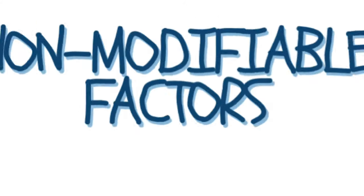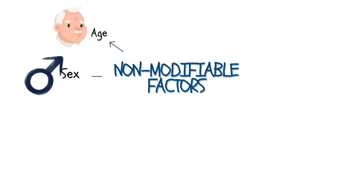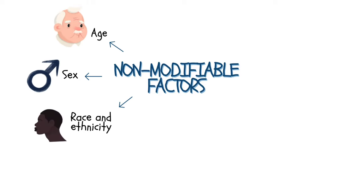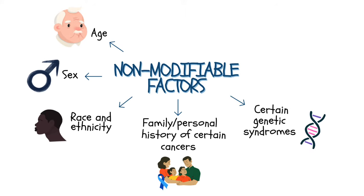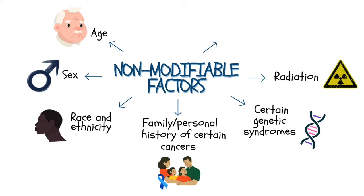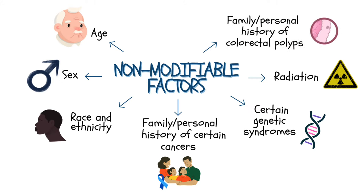Non-modifiable factors include age, sex, race and ethnicity, family or personal history of certain types of cancer, certain inherited genetic syndromes, radiation, and family or personal history of colorectal polyps.